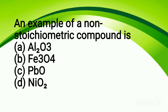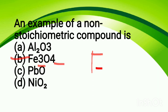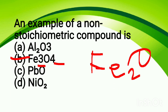An example of a non-stoichiometric compound is: option A, Al₂O₃; option B, Fe₃O₄; option C, PbO; option D, NiO₂. The correct answer is Fe₃O₄. Non-stoichiometric compounds have different stoichiometries — generally iron, nickel, or copper compounds show this. Their coordination numbers and valencies can change, so they arrange with different numbers of molecules to form compounds like Fe₃O₄, where iron exists in different oxidation states.